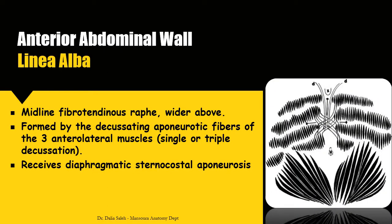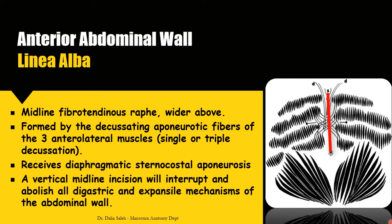We can see the aponeurotic extension of the sternocostal origin of the diaphragm, the decussating fibers at the linea alba, and the fibrous tendinous intersections of the rectus abdominis. If there is sudden contraction of the abdominal muscles — as in coughing — this attacks the aponeurotic fibers at their weakest point, predisposing to tearing and hernia formation. Also, a vertical midline incision in the linea alba, especially in the epigastric region, will interrupt all digastric and expansile mechanisms of the abdominal wall, predisposing to incisional hernia.